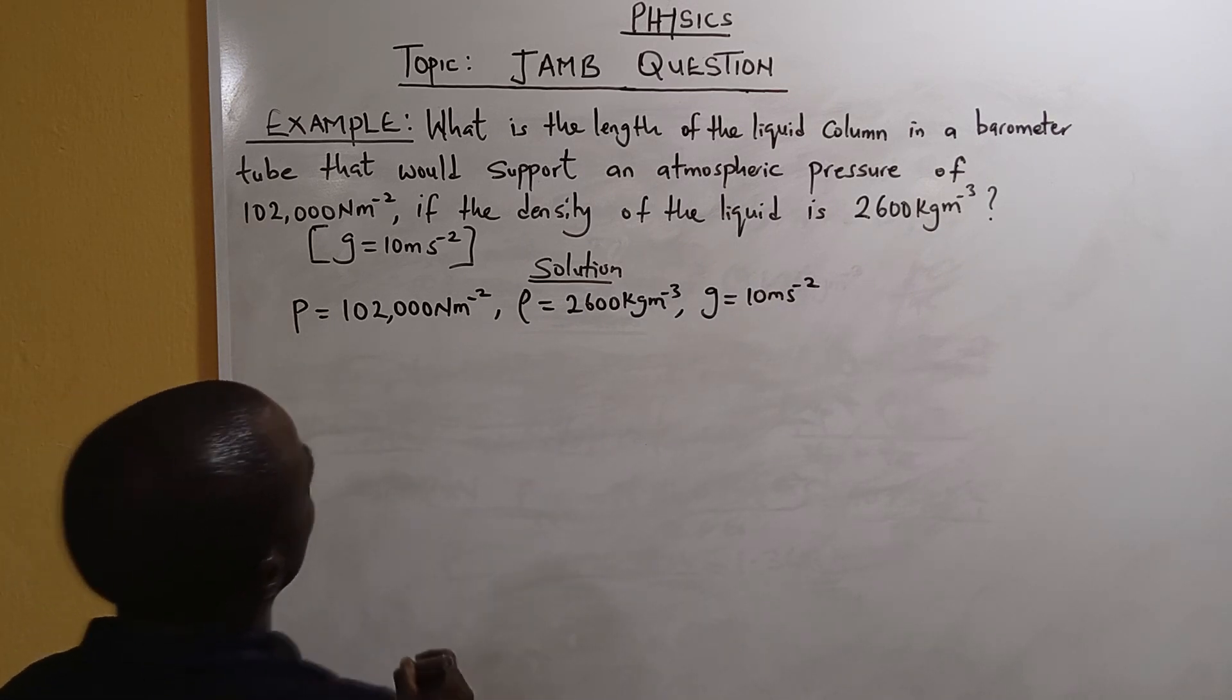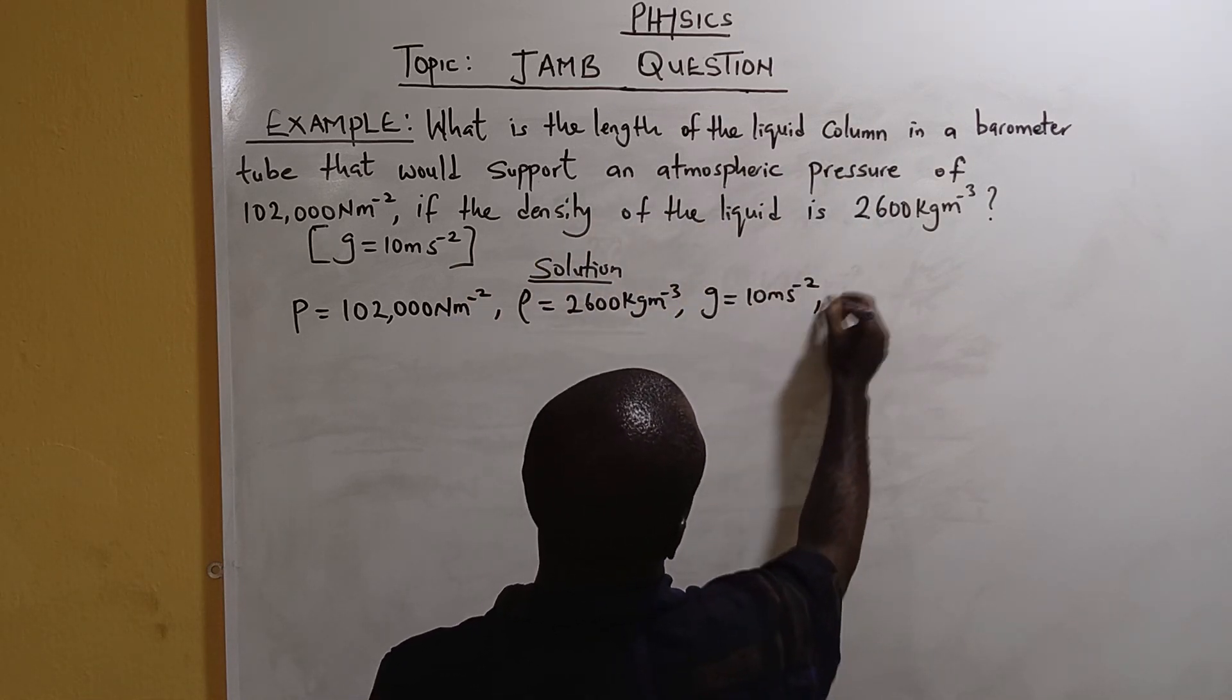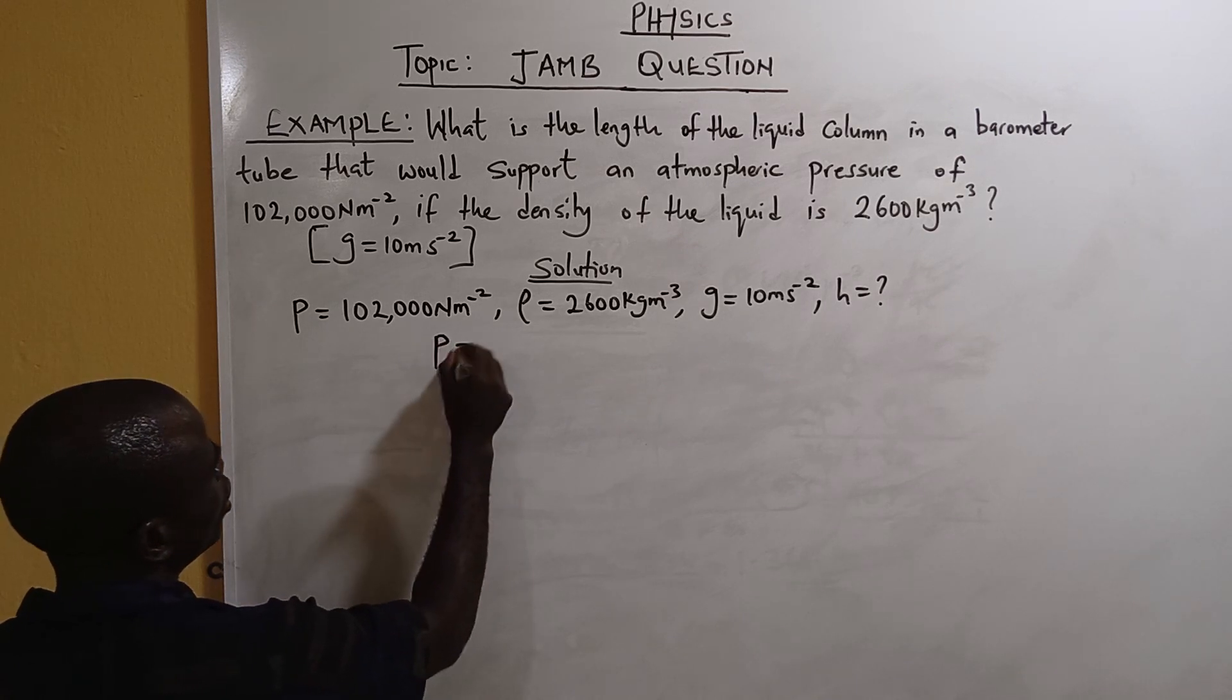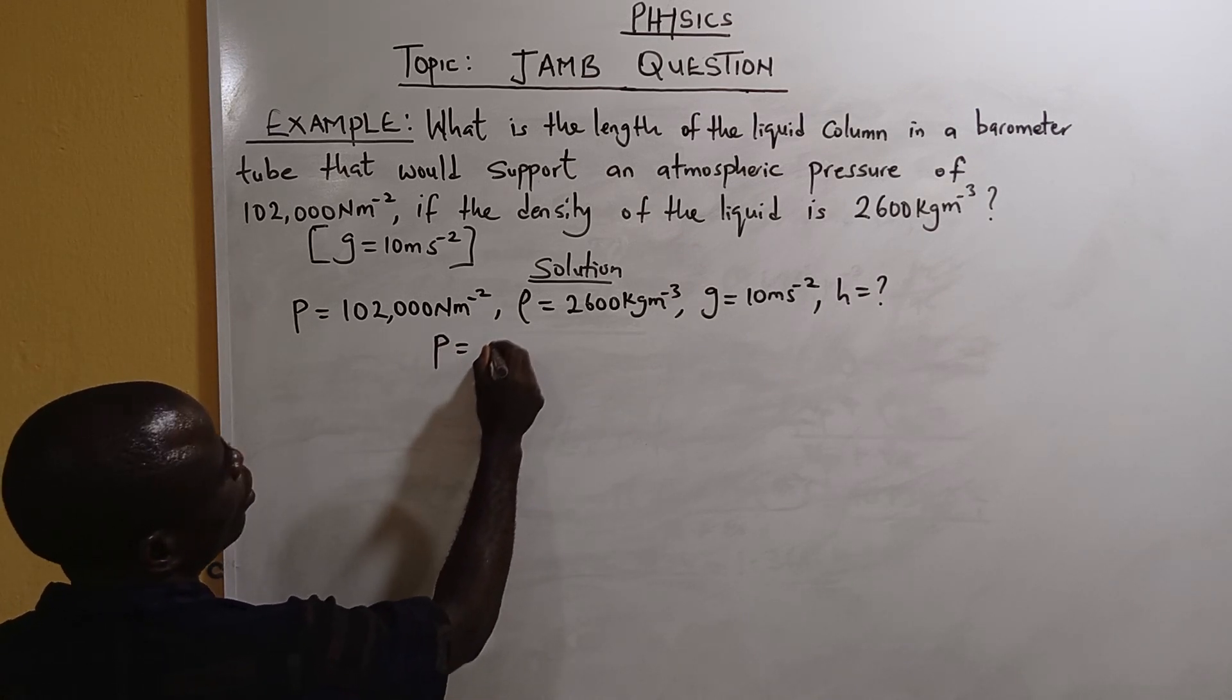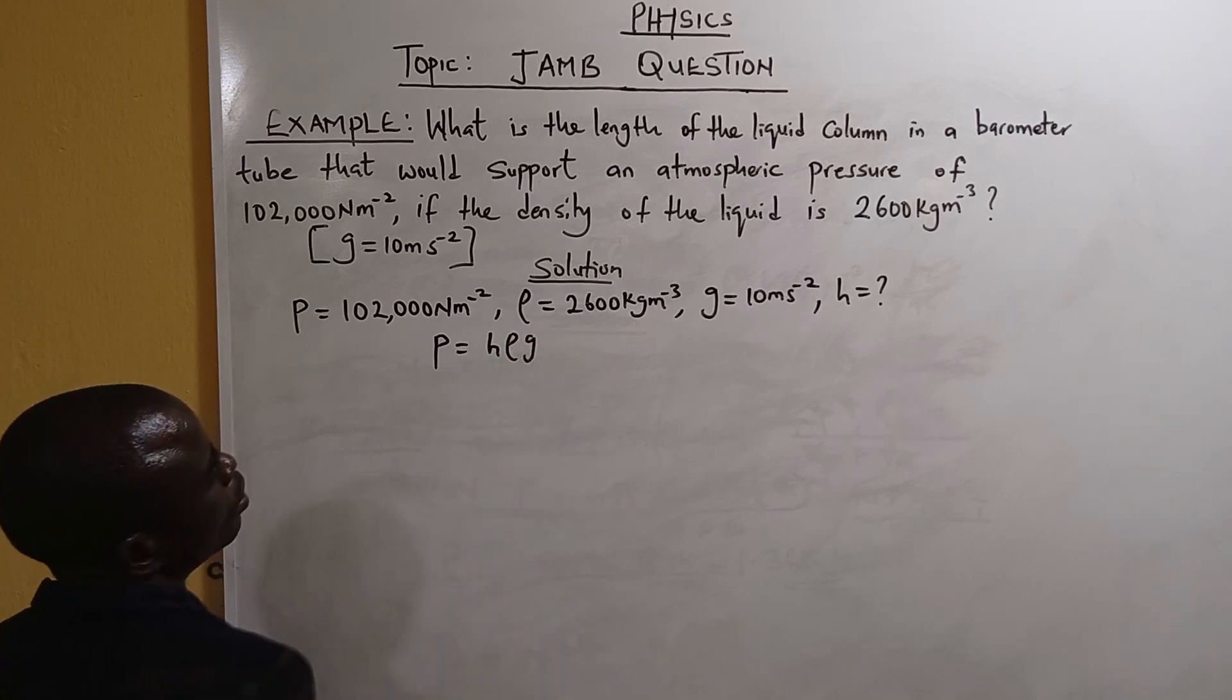Now we have to look for the height. What is the length of the liquid column in the barometer? That's H. Now don't forget the general formula P equals rho g H.